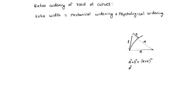R² + L² = R² + E² + 2RE. E² is very small, and R² gets cancelled. So E = L²/2R. This is called off-tracking.